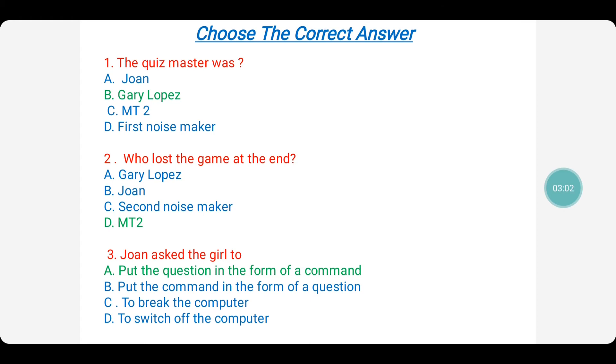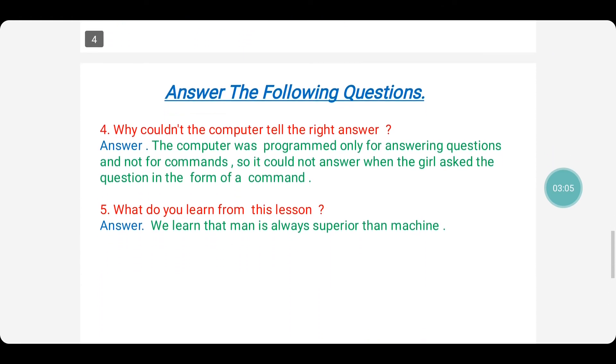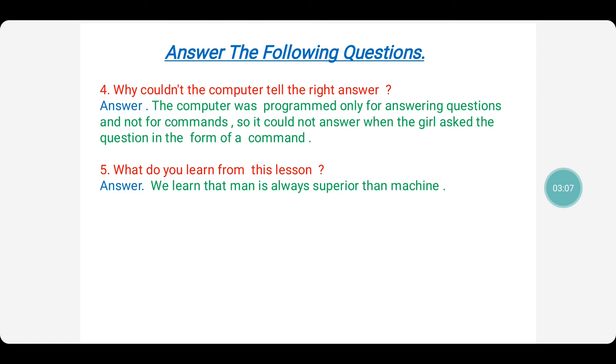On to the question and answers: Why couldn't the computer tell the right answer for the last question? The computer was programmed only for answering questions and not for commands, so it could not answer when the girl asked a question in the form of a command. If the last question was put in the question form, the computer could have answered it and would have won the game. But when the format was changed, the computer could not answer it.